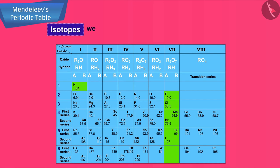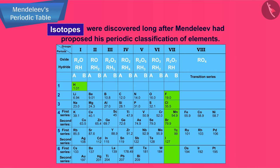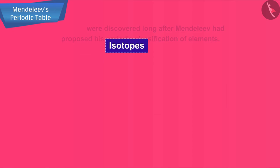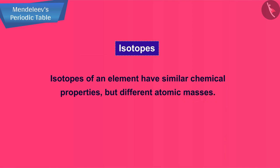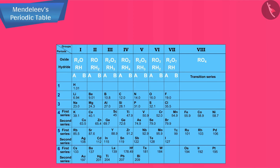Isotopes were discovered long after Mendeleev had proposed his periodic classification of elements. Let us recall that isotopes of an element have similar chemical properties but different atomic masses. Thus isotopes of all elements posed a challenge to Mendeleev's periodic law.